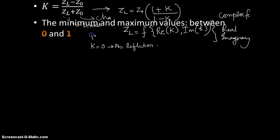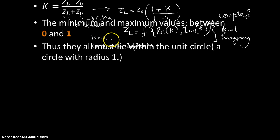If you have a K value that is equal to 1, it means that there is complete reflection. Thus they all must lie within the unit circle radius.